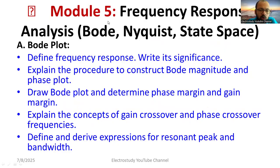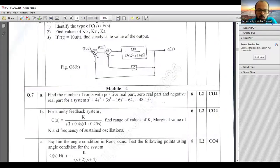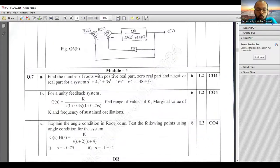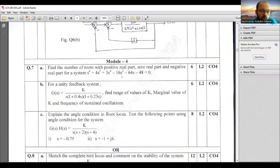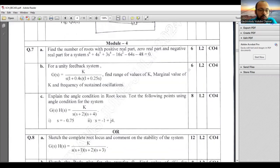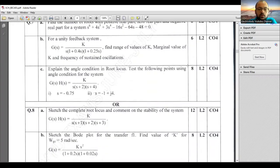In Module 4, you may get either a Routh-Hurwitz problem or theory question, or a root locus question where the loop transfer function is given and you compute stability by determining how many poles are located in the right half of the s-plane.